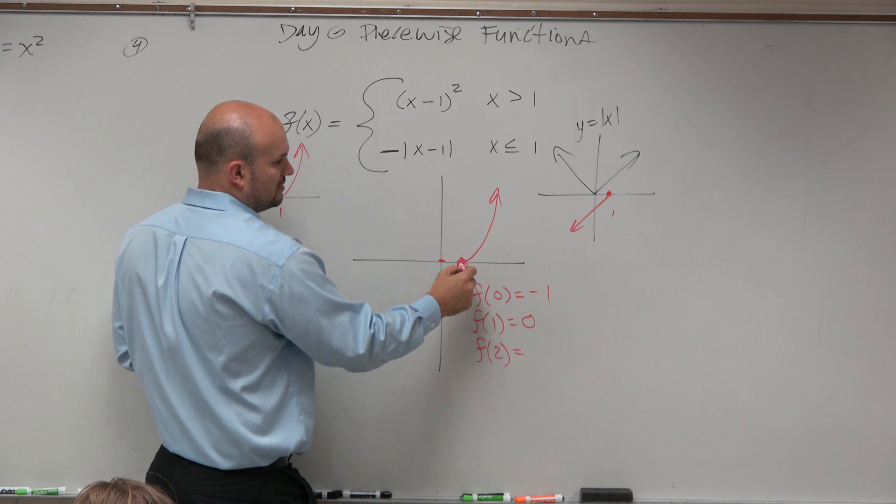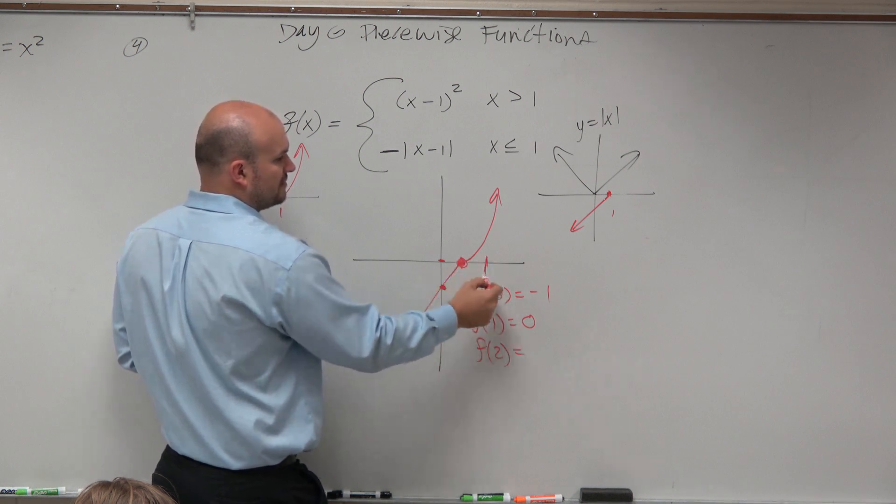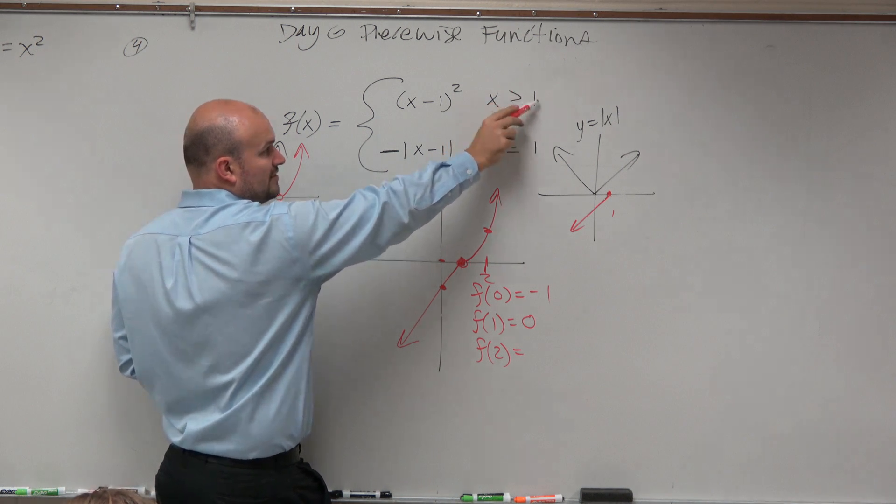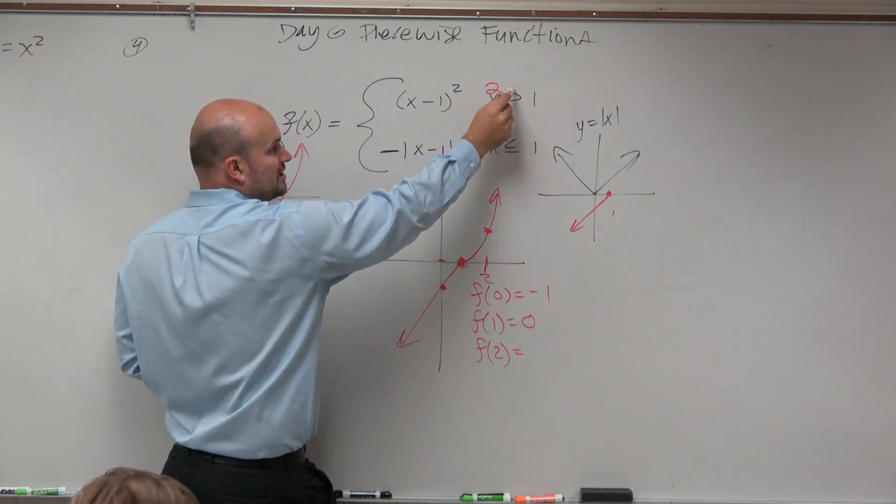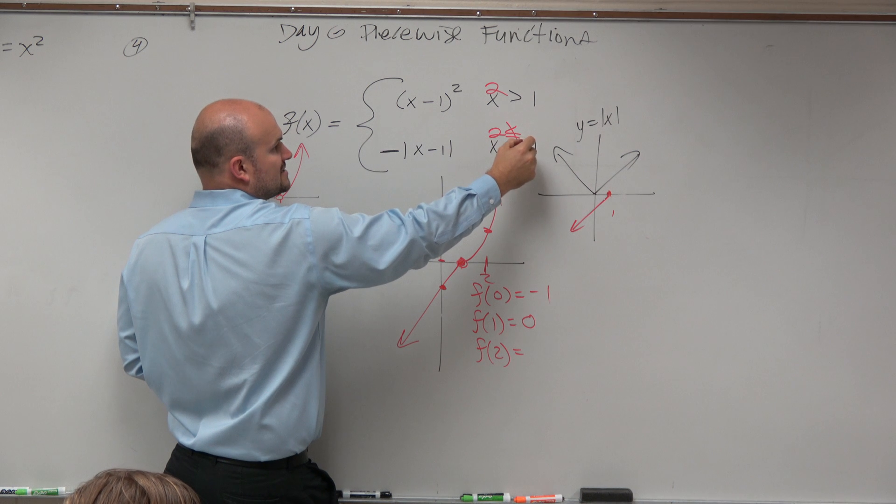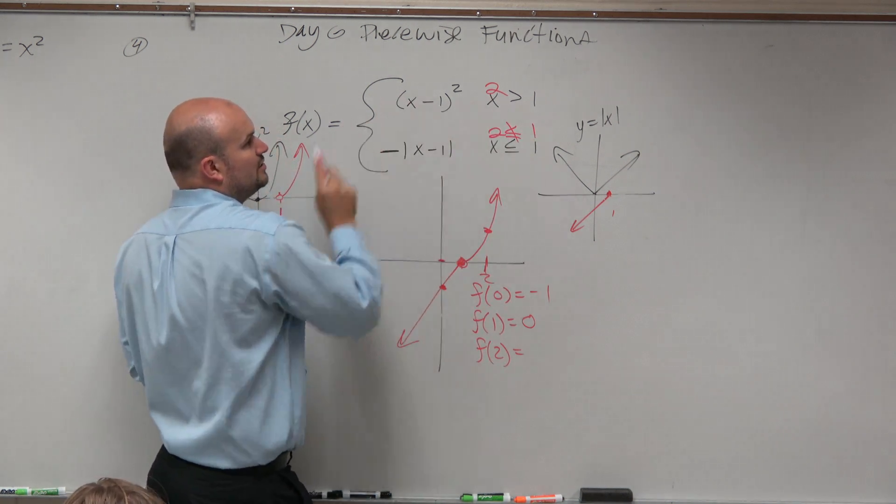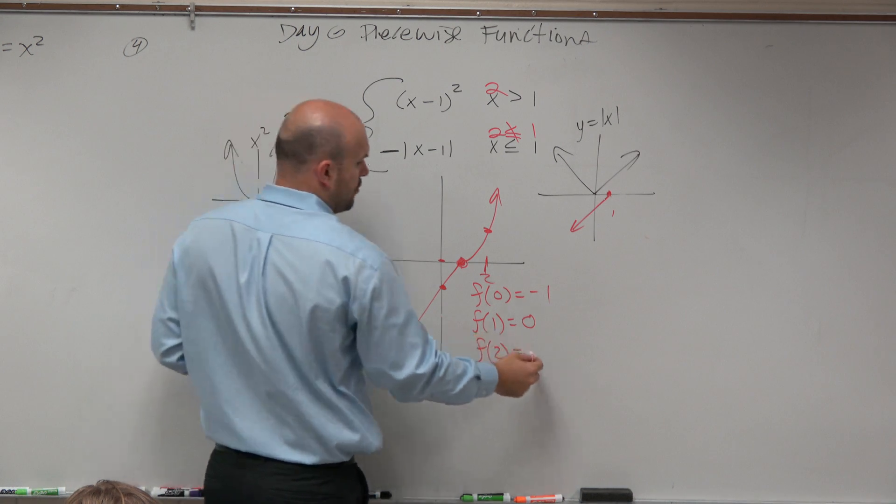f of 2. Which function is dealing with the number 2? Well, it's this function, right? Because x is 2 is greater than 1, right? 2 is greater than 1. 2 is not less than or equal to 1. Since 2 is greater than 1, you're going to use this one. 2 minus 1 is 1. 1 squared is 1.